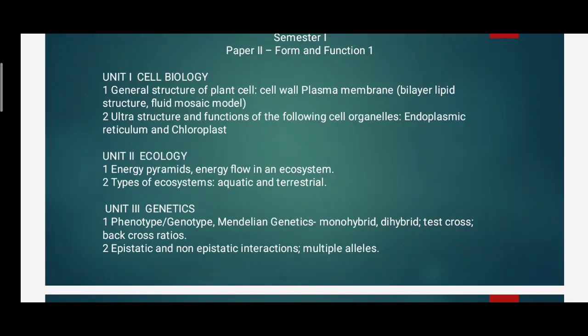Unit third is on genetics. In genetics, the first point is on phenotype and genotype, then Mendelian genetics, and you also have to study different crosses like monohybrid, dihybrid, test cross, back cross, and ratios. The second point in this unit is epistatic and non-epistatic interactions, and also multiple alleles. This is your syllabus for paper second, which is on form and functions.